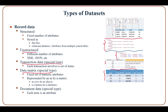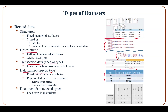Document data is another special type in which each record is a document and each attribute is a term. Attribute values are actually the counts of the corresponding terms in the corresponding document.